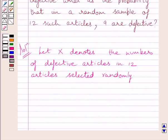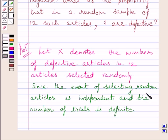The event of selecting random articles is independent, and the given number of trials is 12. Since the event of selecting random articles is independent and the number of trials is definite, the trials are Bernoulli trials.